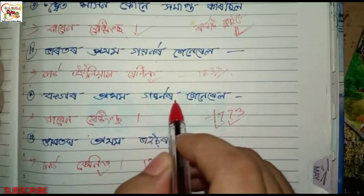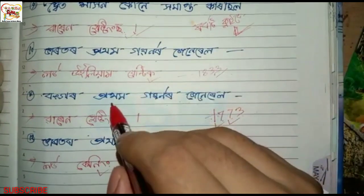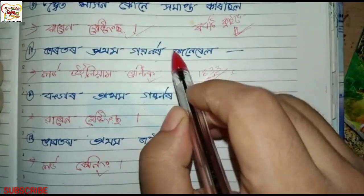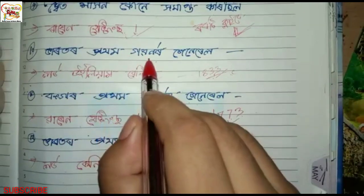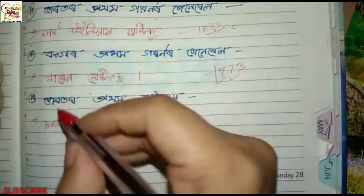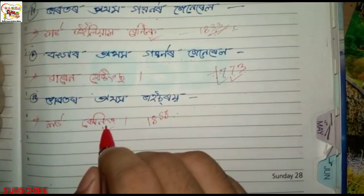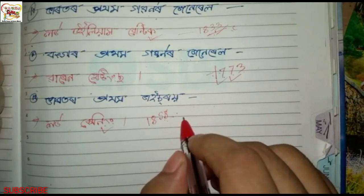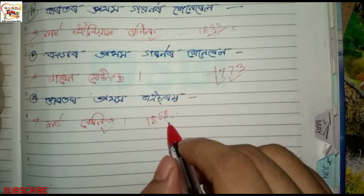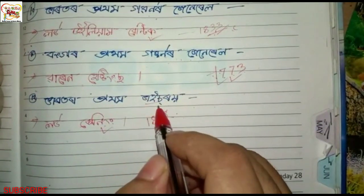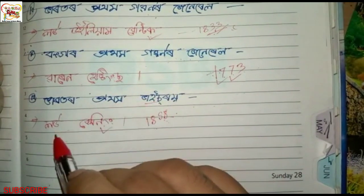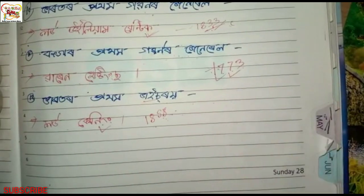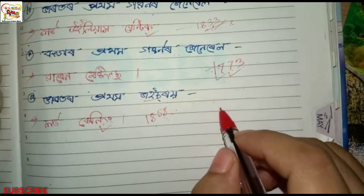The governor is 1773 as a Regulatory Act. The first Governor General was Lord William Bentinck in 1833. The first Viceroy was Lord Canning. After the 1857 Sepoy Mutiny, the East India Company's rule ended and Lord Canning became the first Viceroy. Please share, like, and subscribe.